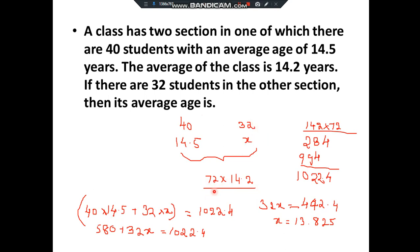Multiplying gives 1022.4 on the right side. So: 580 + 32x = 1022.4. Taking 580 to the right side: 32x = 1022.4 − 580 = 442.4. Therefore x = 442.4 ÷ 32, which gives the final answer x = 13.825. So the average age of section B is 13.825 years.